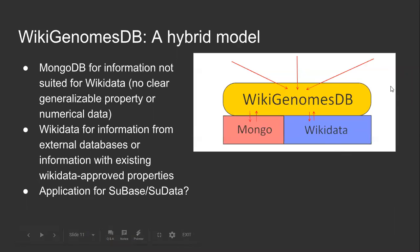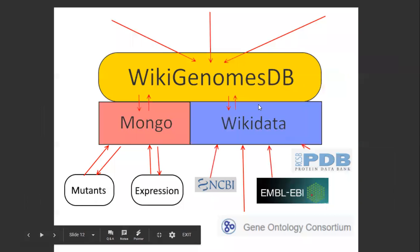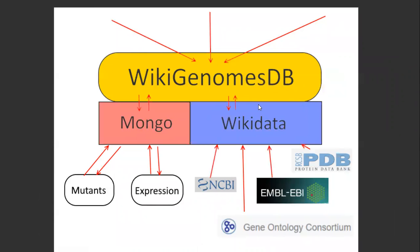The backend of WikigenomesDB follows a hybrid model. Information that follows the generalizable model of a gene-relationship-value can be stored in Wikidata. However, some knowledge does not conform easily to the Wikidata structure. Information that contains numerical data, or information too specific to an organism, must therefore be stored in a local database. We use MongoDB to store mutant data and experimentally determined knowledge that does not easily conform to Wikidata standards. Most third-party data comes from Wikidata, not the actual source. For instance, genomic start and end properties are read directly from Wikidata, even though the information originally came from NCBI.